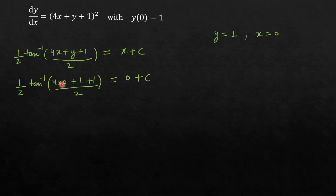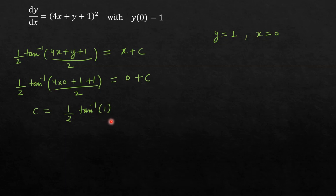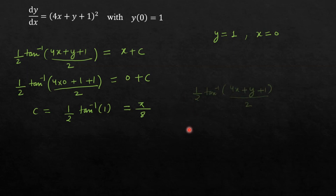So 4 into 0 is 0, 1 plus 1 is 2, and 2 by 2 is 1. So you will get the value of c is equal to half tan inverse 1. The value of tan inverse 1 is equal to pi by 4, so pi by 4 divided by 2 is equal to pi by 8. We got the value of c as pi by 8. Now putting this value back gives the complete solution: half tan inverse of (4x plus y plus 1) divided by 2 is equal to x plus pi by 8.